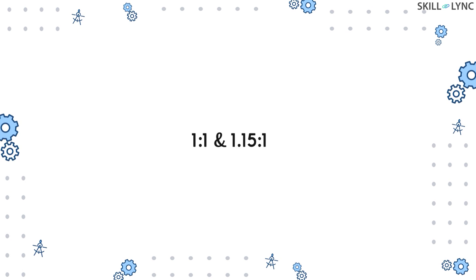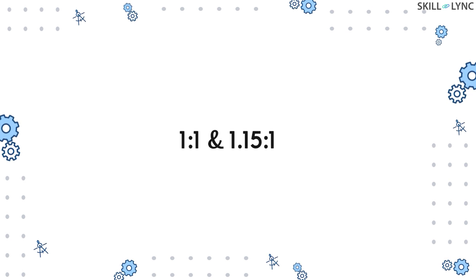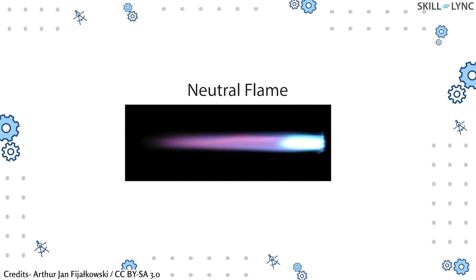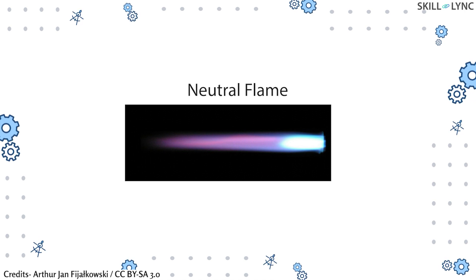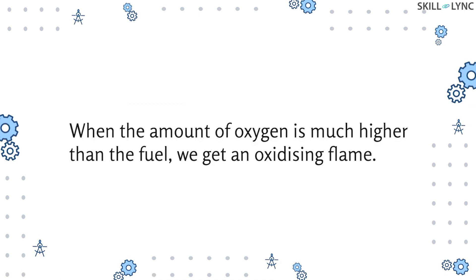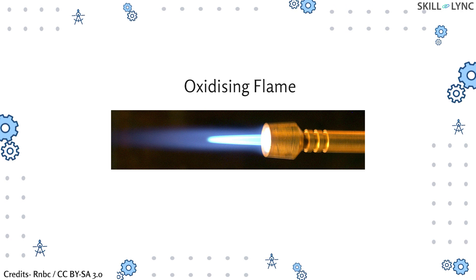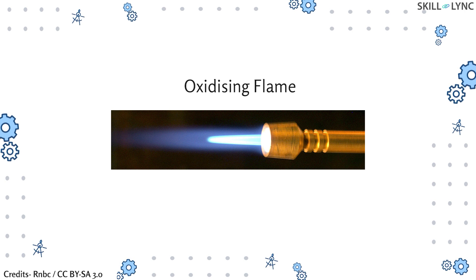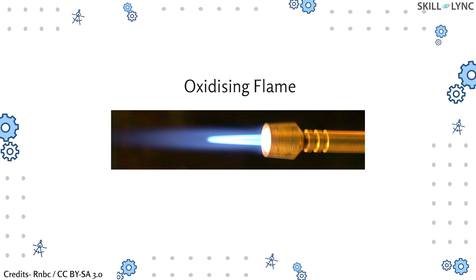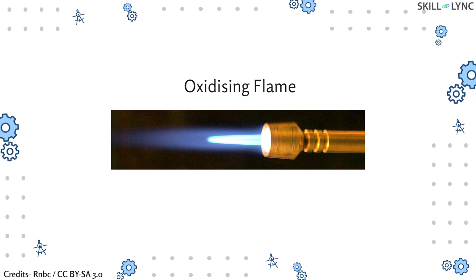By changing these characteristics, three different types of flames can be obtained. If the ratio is between 1:1 and 1.15:1, full combustion of fuel and oxygen takes place, producing a neutral flame. Most welding is done with a neutral flame as it has the least chemical effect on the workpiece. When the amount of oxygen is much higher than the fuel — a ratio of generally 1.5:1 — we get an oxidizing flame. The oxidizing flame is hotter than the neutral flame and often has a crackling noise. It is generally used to weld copper and its alloys, but is avoided for most metals as excess oxygen can lead to formation of metal oxides.